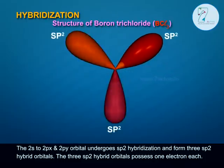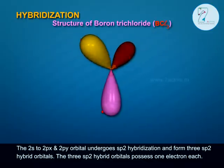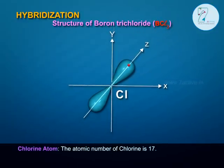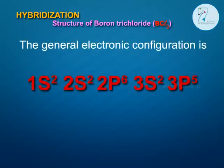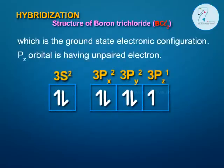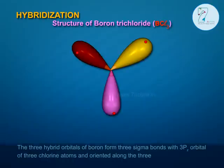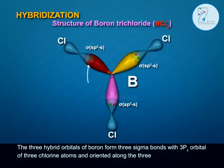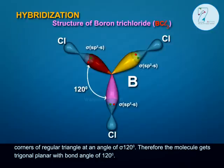The three SP2 hybrid orbitals each possess one electron. The atomic number of Chlorine is 17, with ground state electronic configuration 1s2, 2s2, 2p6, 3s2, 3p5. The 3pz orbital of Chlorine has an unpaired electron. The three SP2 hybrid orbitals of Boron form three sigma bonds with the 3pz orbitals of three Chlorine atoms, oriented along the three corners of a regular triangle at an angle of 120 degrees.